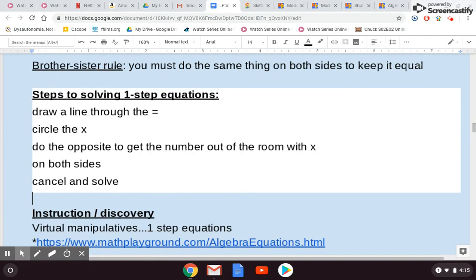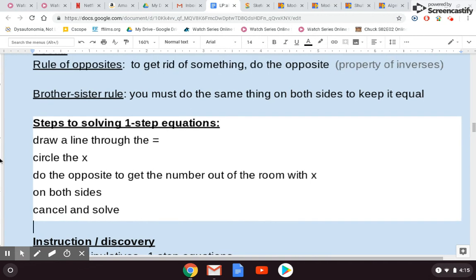Then we have our steps to solving one-step equations. Make sure you have these written on the paper that you're going to turn in at the end of class. You're going to draw a line through the equal sign, circle the x, do the opposite to get the number out of the room with x, and you're going to do that on both sides, then you're going to cancel and solve. Now this may not make sense yet, but wait until we do some example problems.